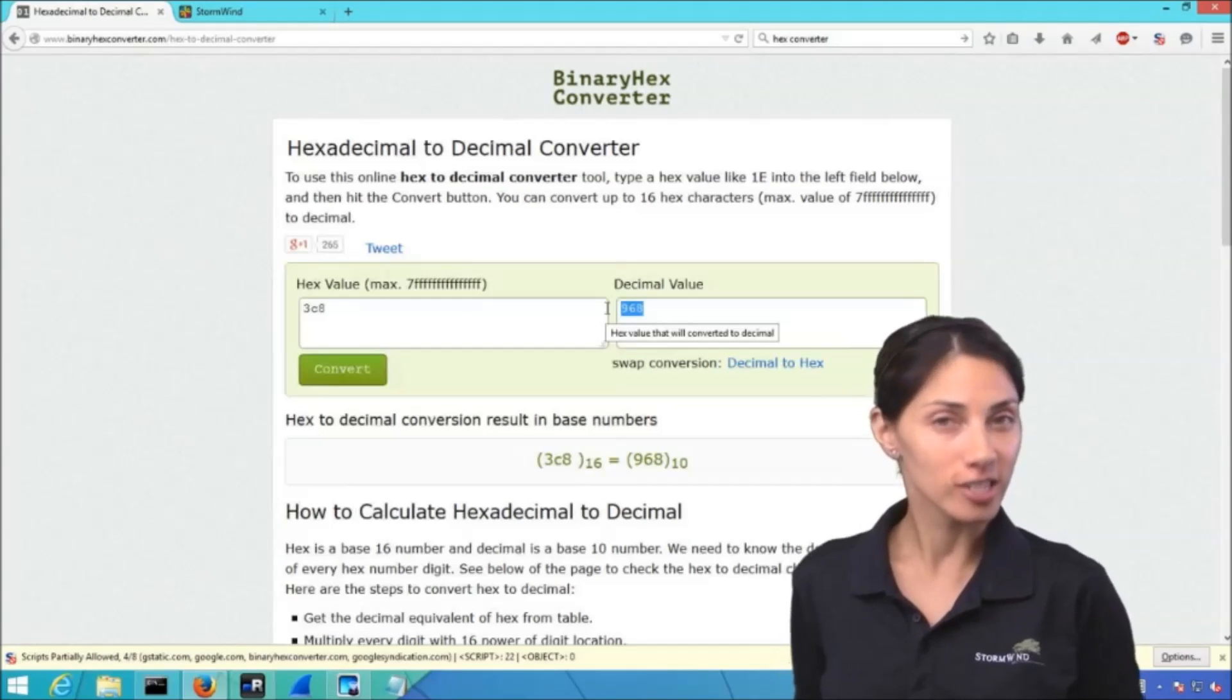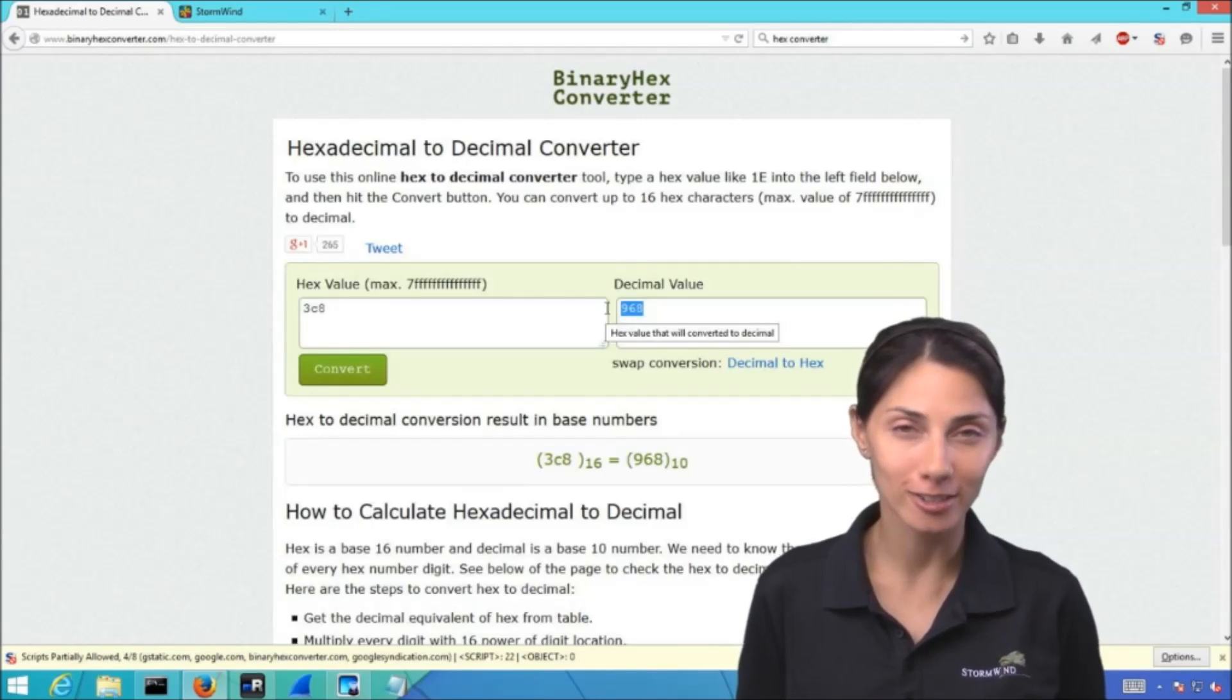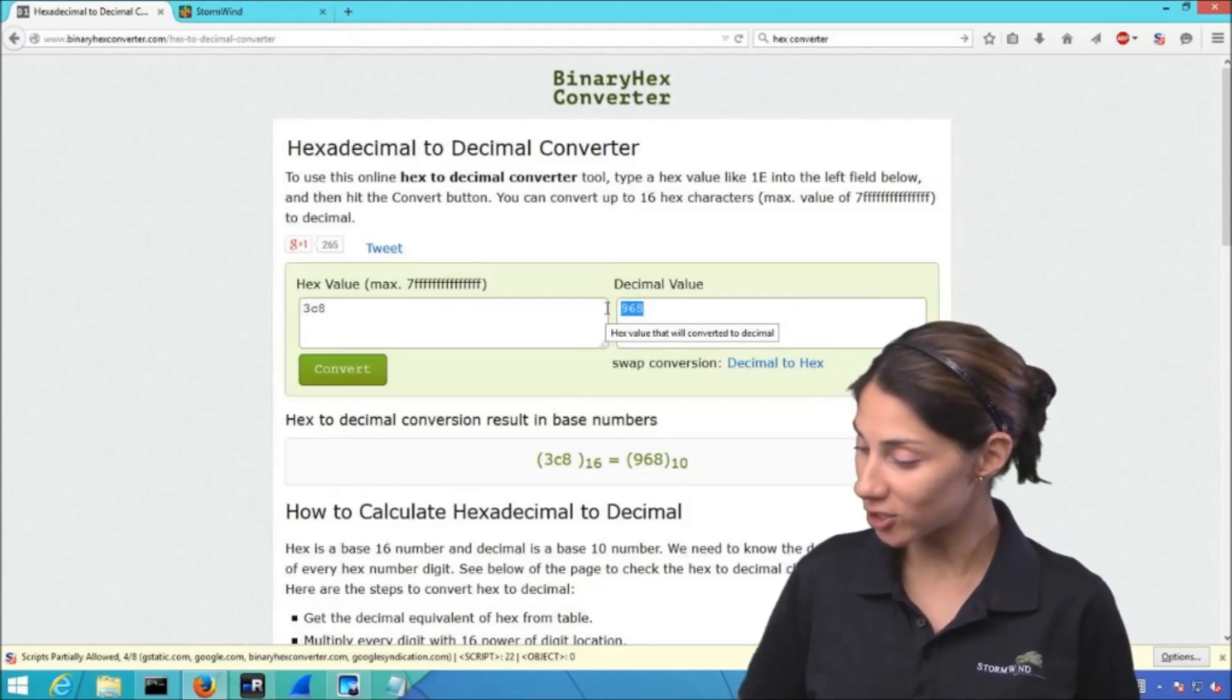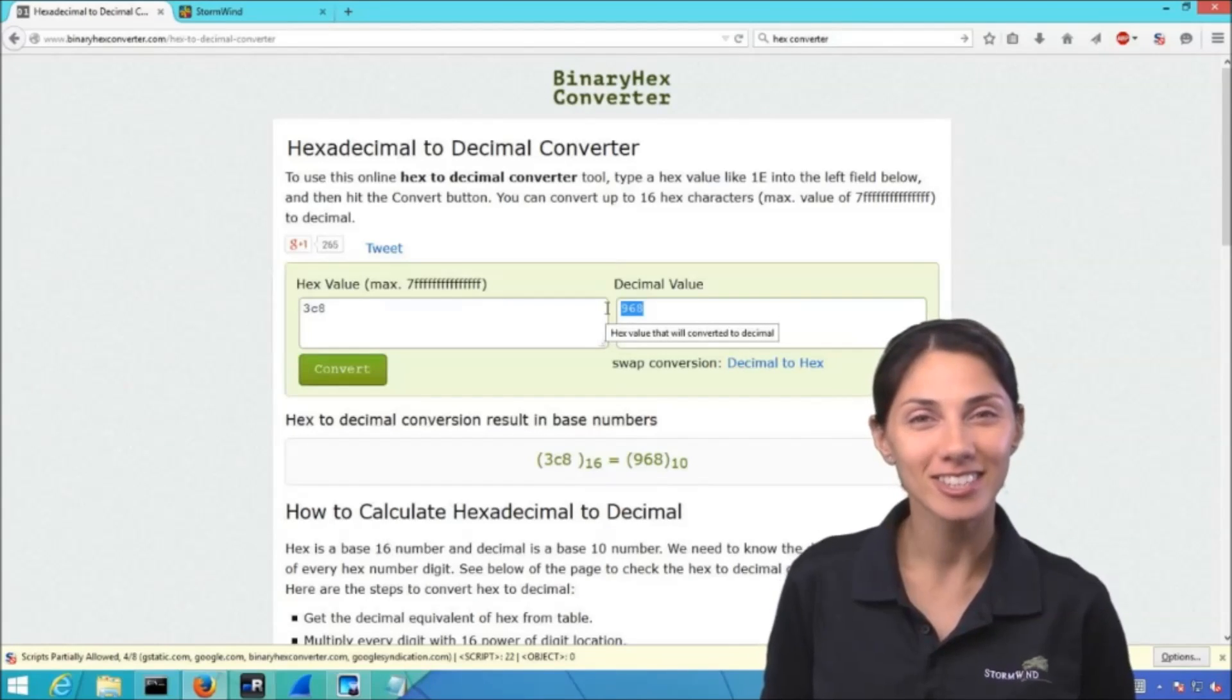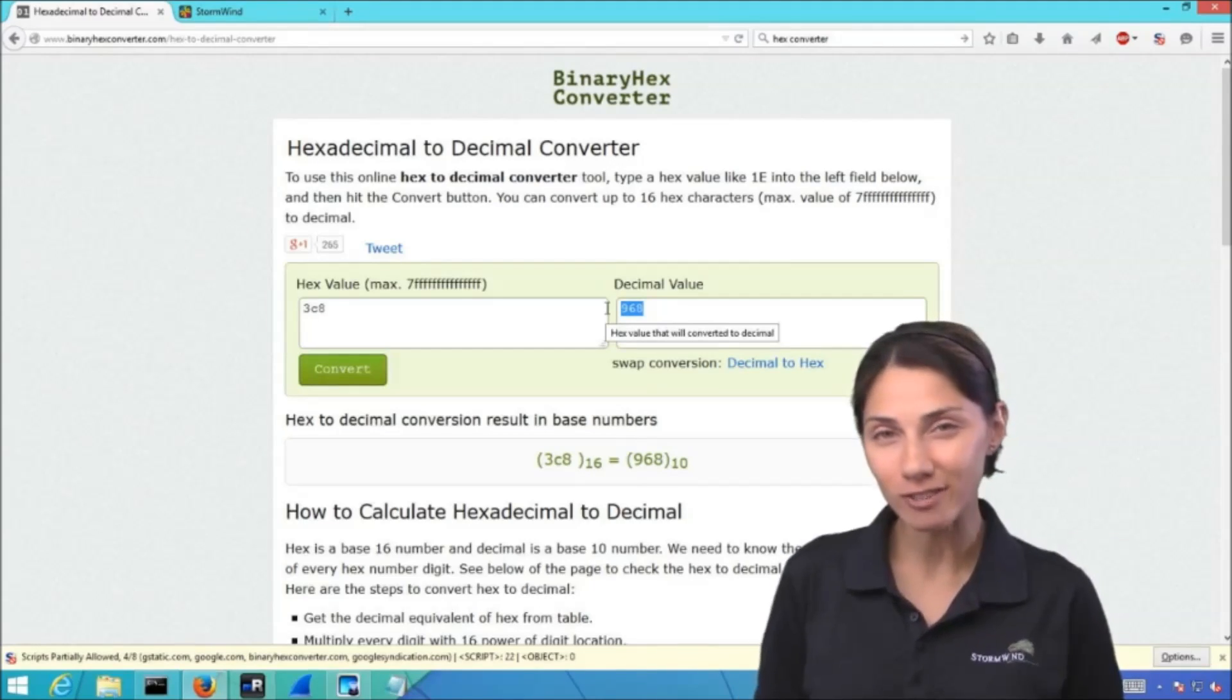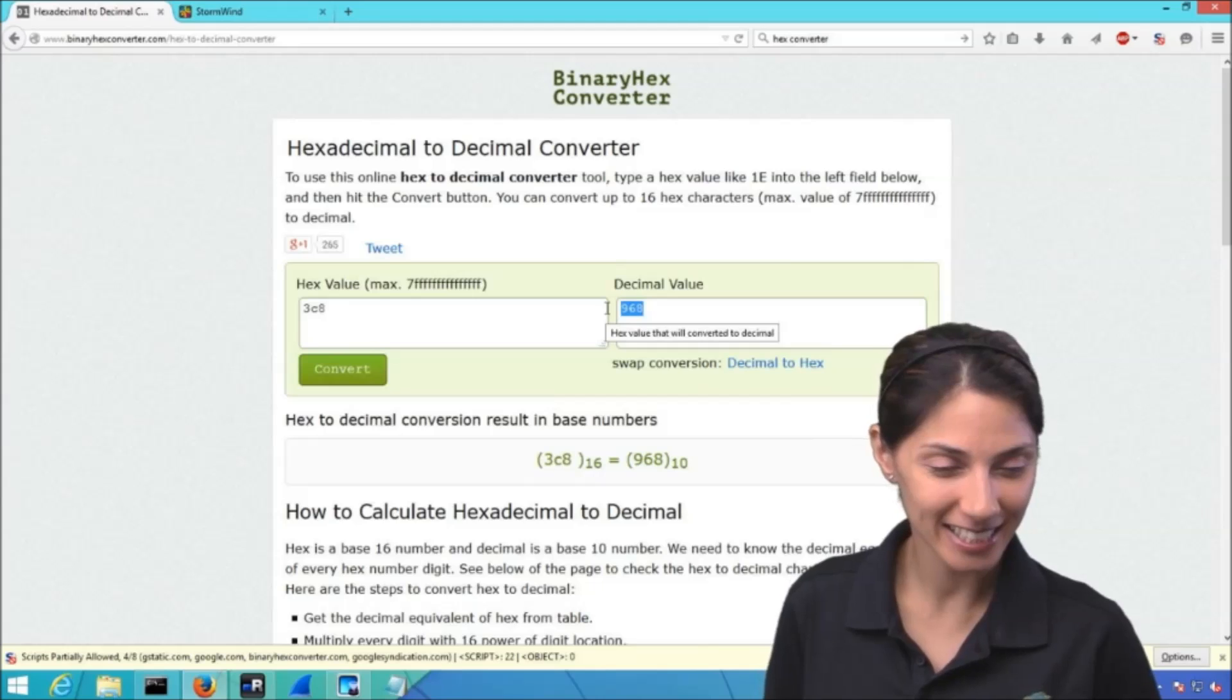So hopefully this was helpful for all of you, gave you a good feel for not just how to take hex numbers and move them over to decimal, but also to figure out what the binary value is as well. Obviously if you were given a binary value you could just go through and punch those numbers in just the way we did, and you could certainly do the opposite as far as converting them over. So thank you so much for watching this video and enjoy your CCNA Data Center studies. Take care everybody.